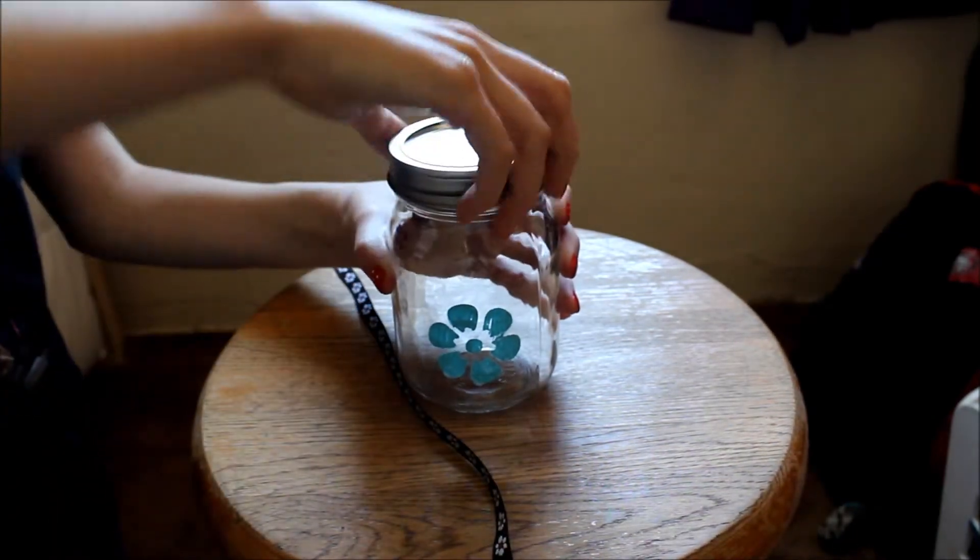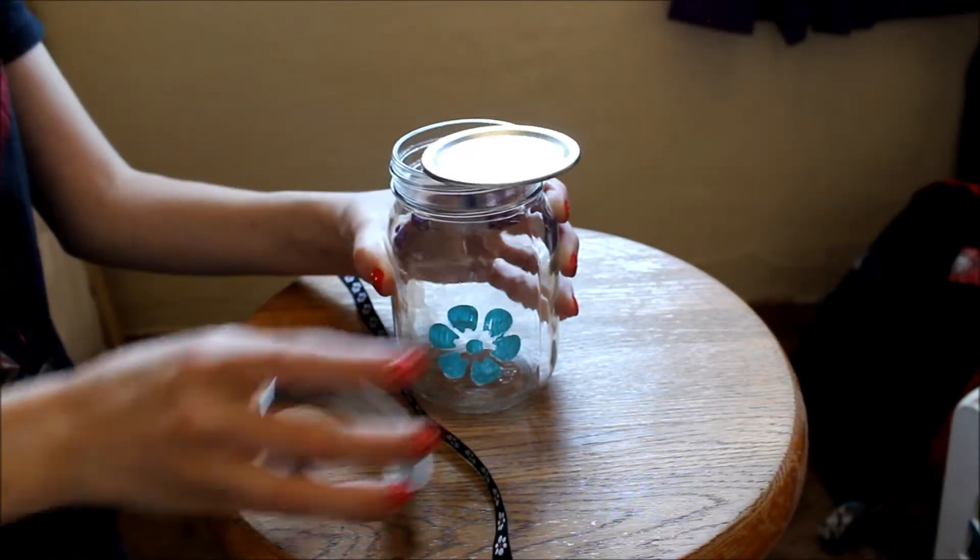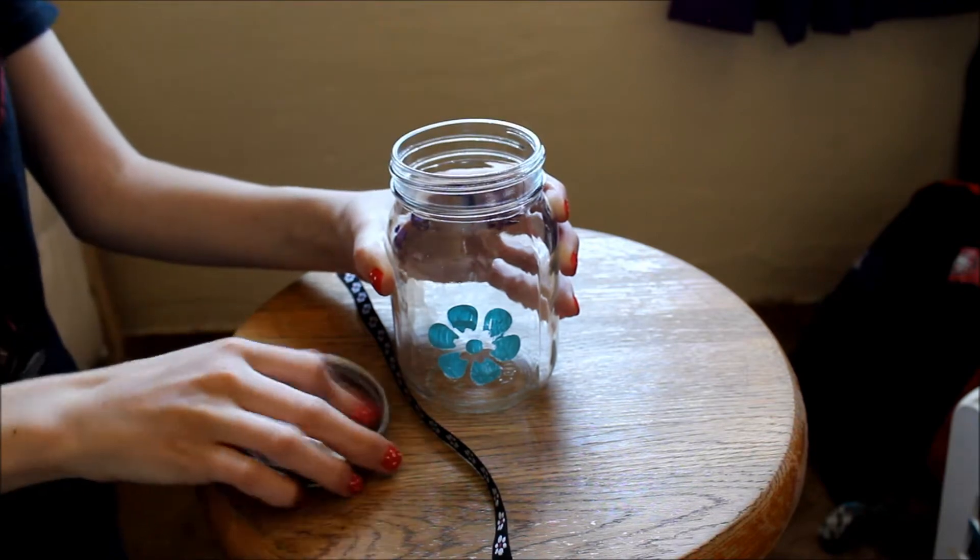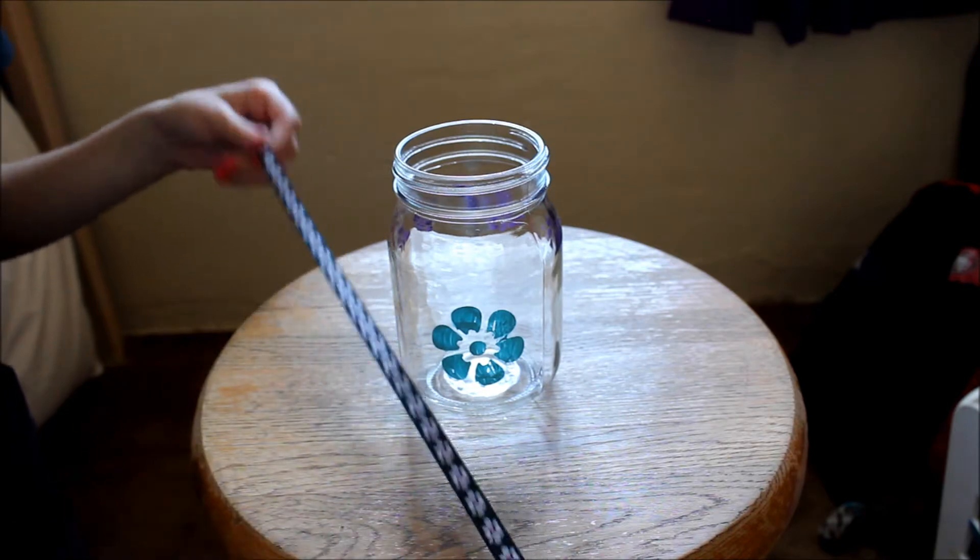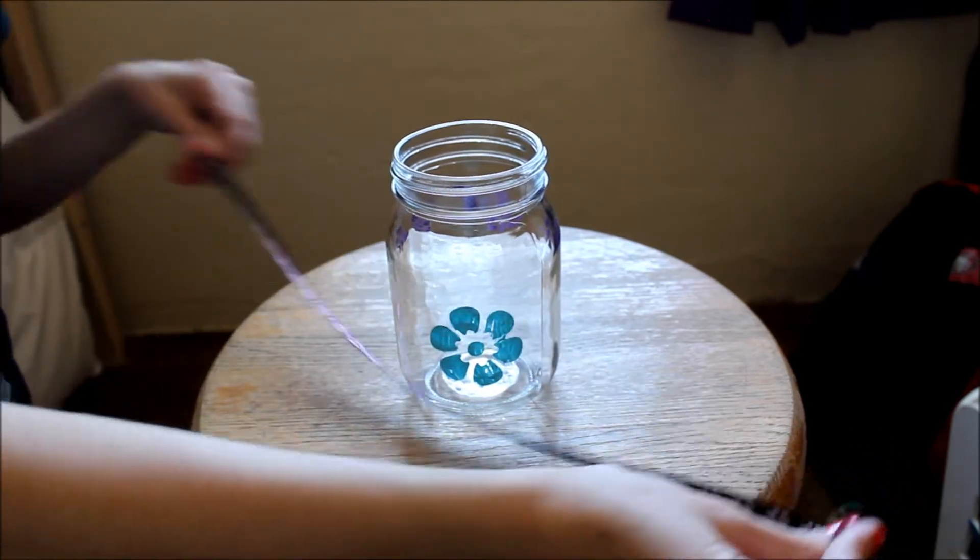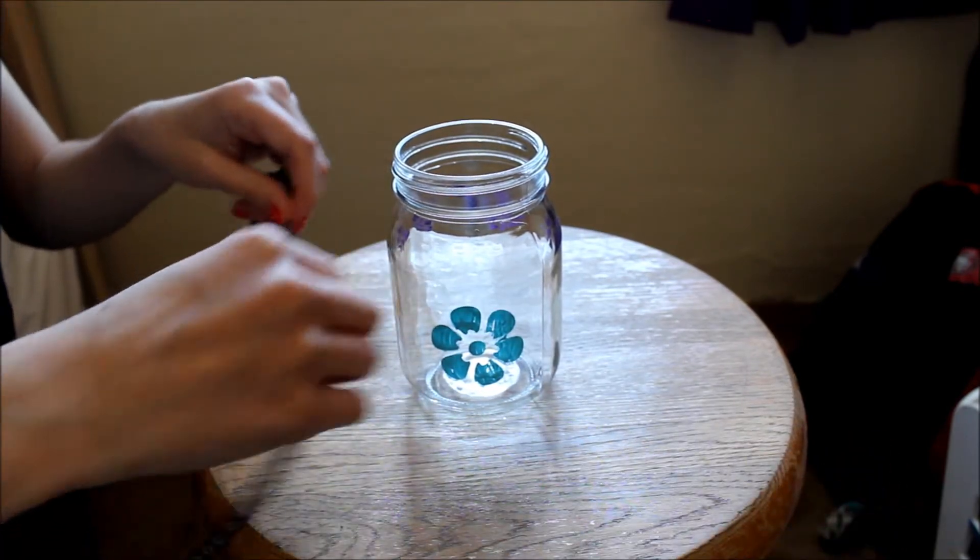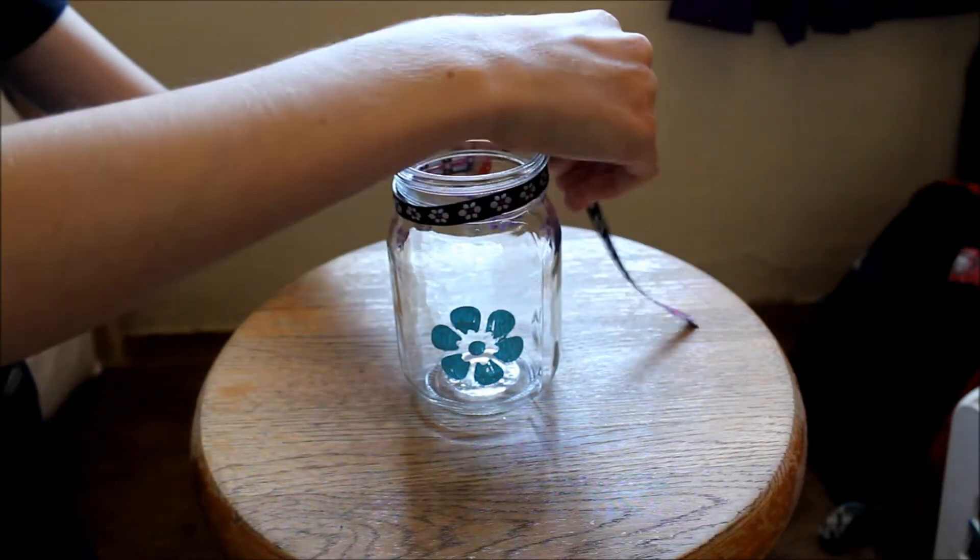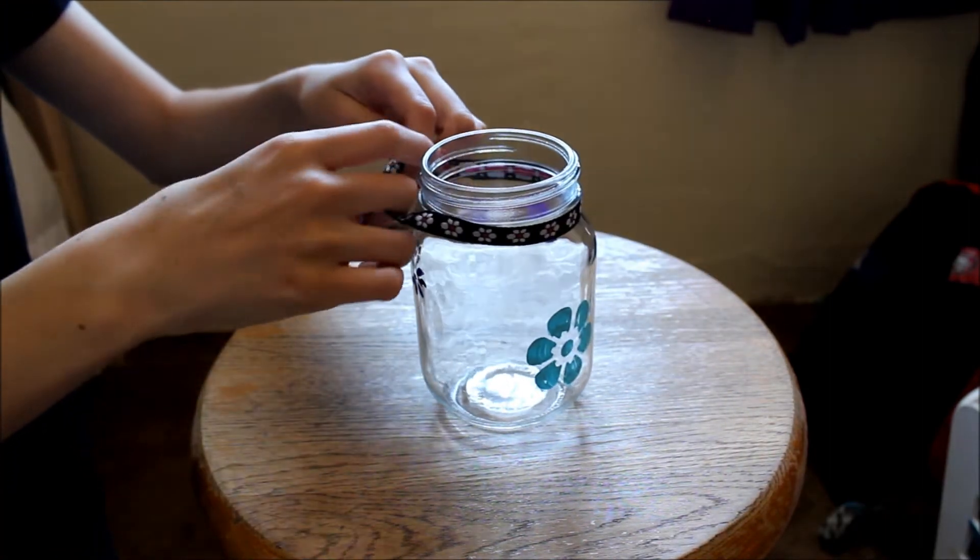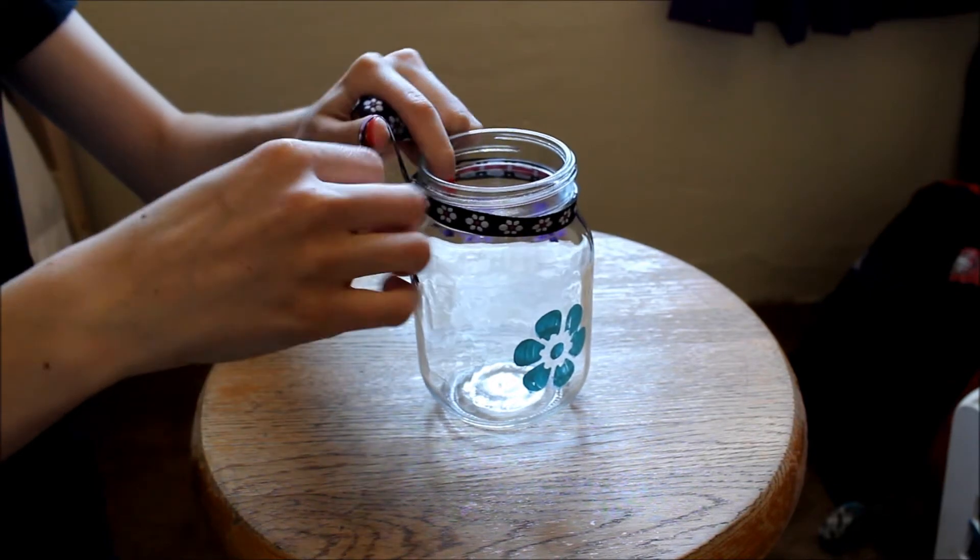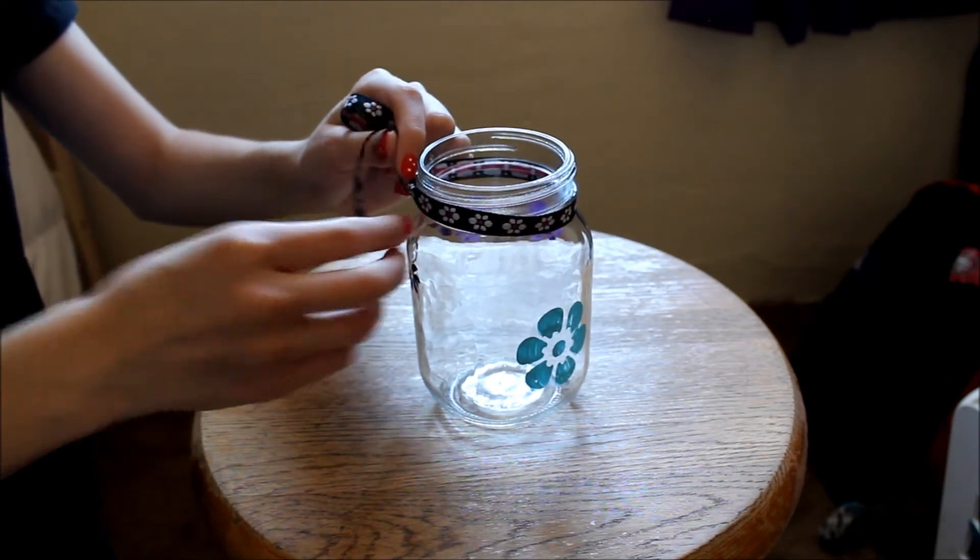Okay so we're going to take the lid off and set them aside. And then we're going to take the ribbon, it doesn't matter what it looks like, but I'd recommend it to be something springy and you're going to tie it around the bottle and make sure it's secure at the bottom so that it doesn't come off.